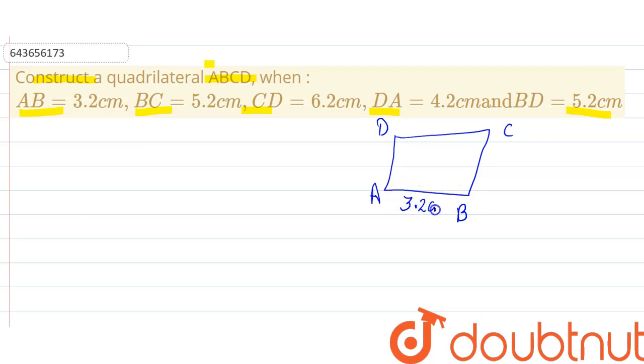So AB is given 3.2 centimeters, BC is 5.2 centimeters, CD is 6.2, AD 4.2. Okay, all four sides are given. And further, BD, this diagonal, is 5.2. This is our rough diagram.